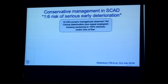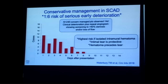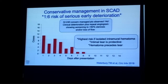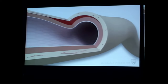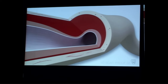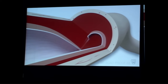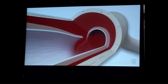Data we just published from a series of 240 patients managed conservatively shows a one-in-six risk of worsening over the next few days. The highest risk is in the first two to three days, burning out after one week. Patients with intramural hematoma alone are at risk of worsening, while patients with an intimal dissection visible are protected. We've learned from OCT that intramural hematoma comes first, causes compressive narrowing, and in some patients decompresses into the lumen — the intramural dissection is a secondary, protective phenomenon.